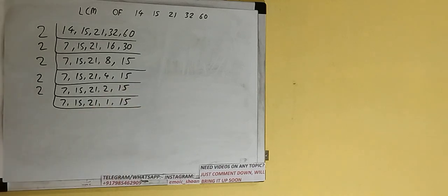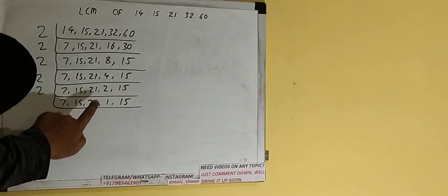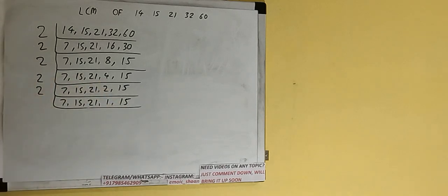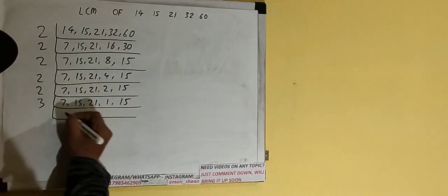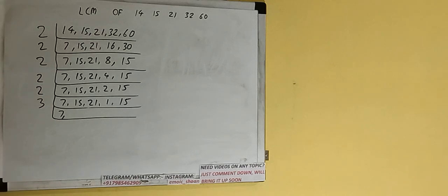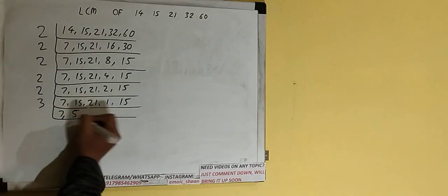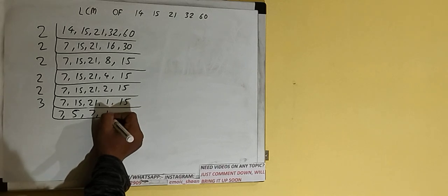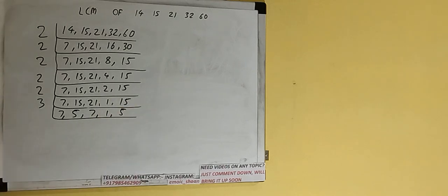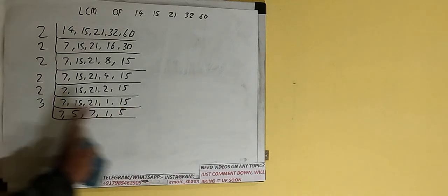Now none of the numbers is divisible by 2, so we check with the next lowest prime number, which is 3. The second, third, and last numbers are divisible by 3. The first number, 7, is not divisible so we copy it down. The second number becomes 5, the third number becomes 7, both middle numbers remain the same, and the last number becomes 5.